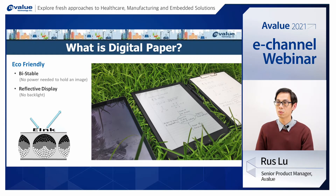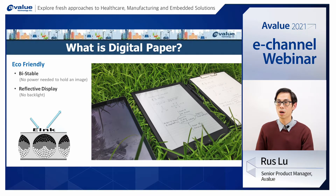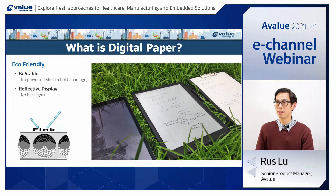Compared with LCD screens, digital paper is easier on our eyes because there is no backlight emitting. And it is very low power since power is consumed only when the screen changes, which means there is no power consumption when the screen is steady.